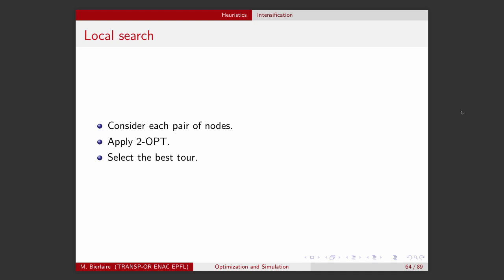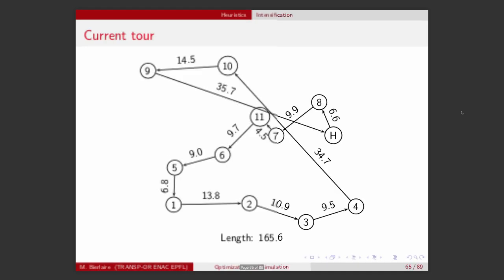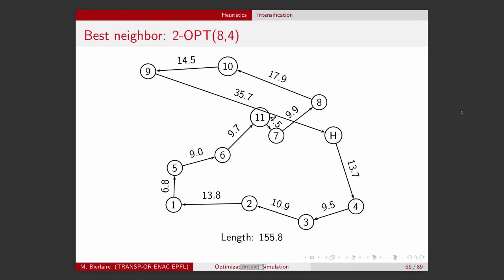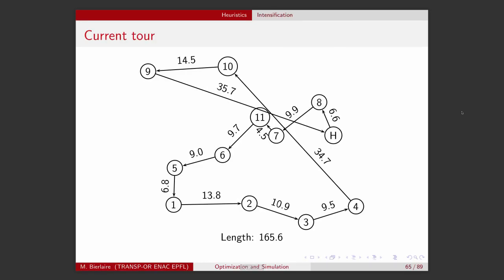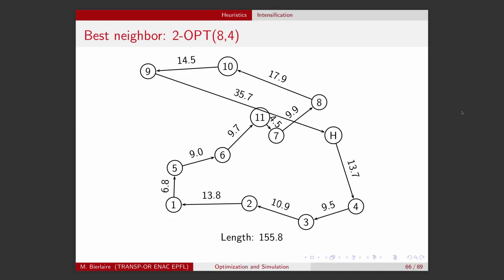But we can use local search. We consider each pair of nodes and apply 2-opt — this is the neighborhood structure. We enumerate all these neighbors and select the best one. After applying the 2-opt neighborhood structure by swapping node eight and node four, we obtain a better tour. The previous one was 165.6, and now the new tour has a length of 155.8.